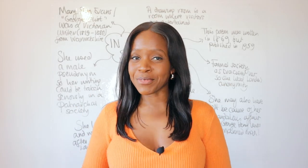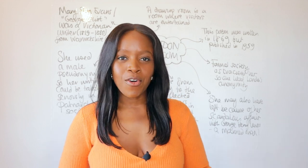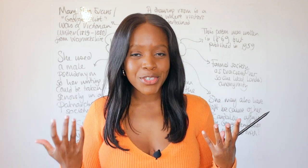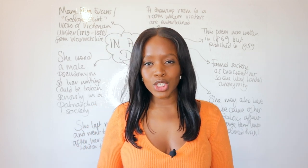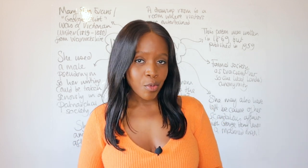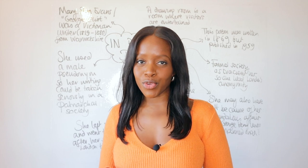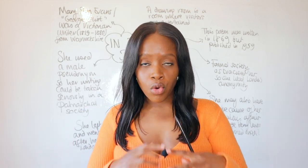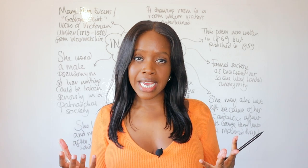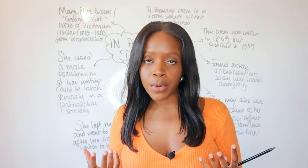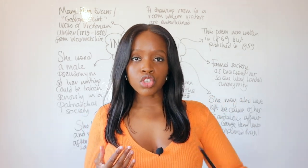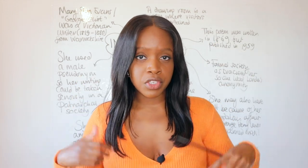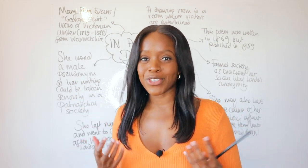Hello and welcome back to another GCSE revision lesson. Carrying on the AQA Worlds and Lives Poetry Anthology series, I now want to move on to the poem called 'In a London Drawing Room' by George Eliot. I want to begin by going over all the contexts you need to know and understand for this poem, and then afterwards I'll do a detailed line-by-line analysis, especially if you're studying this as part of AQA's Poetry Anthology.